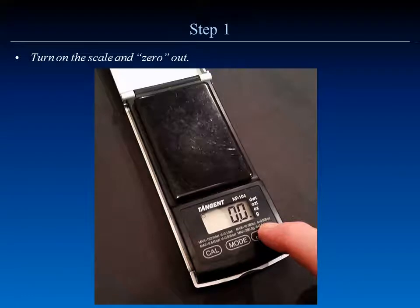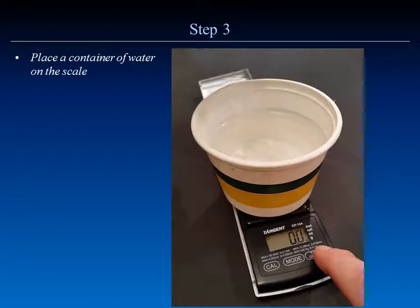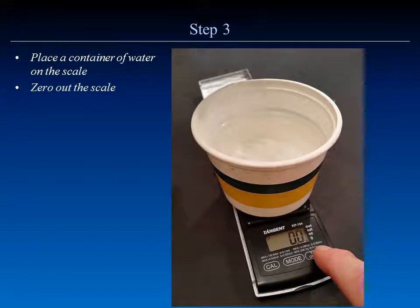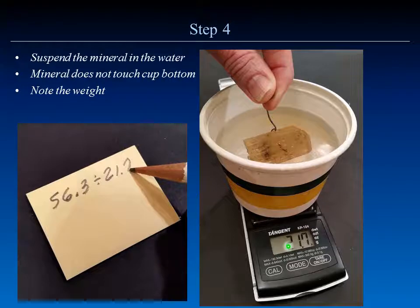The process starts by zeroing out the scale. Then you weigh the mineral — in this case set to grams, we get a value of 56.3 grams. Write that down. Then place the container of water on the scale and zero it out; we do not want the weight of the cup of water, we want to know how much it increases when the mineral is placed in it. Suspend the mineral in the water, totally submerged, making sure you do not touch the cup bottom or sides, then note the weight and write it down.